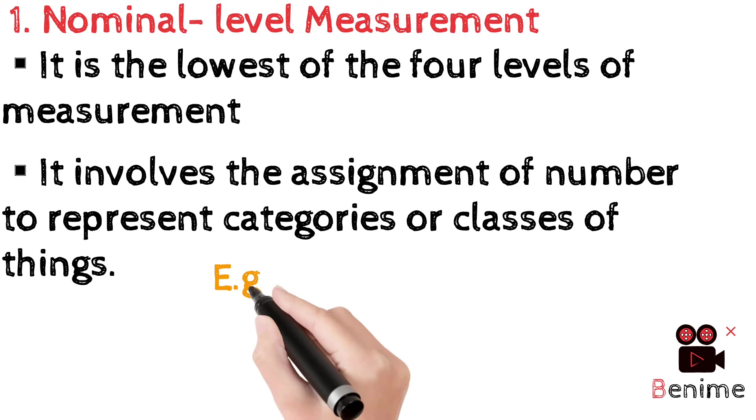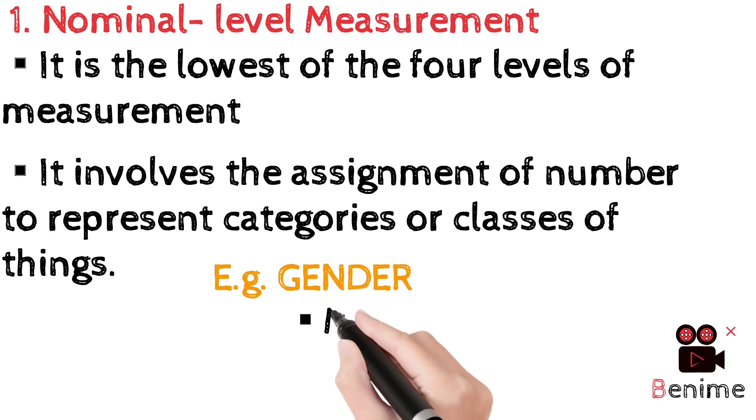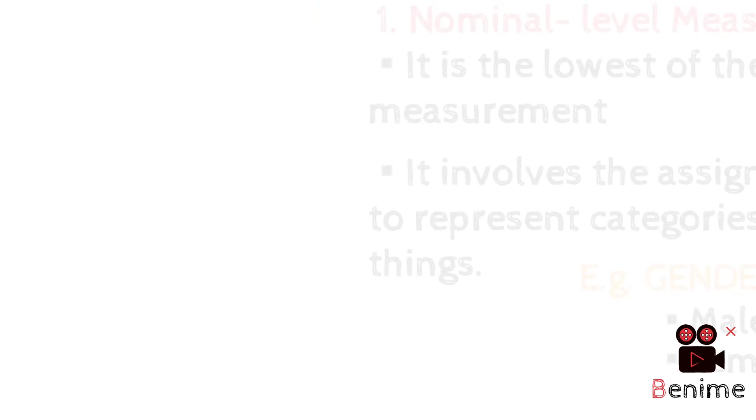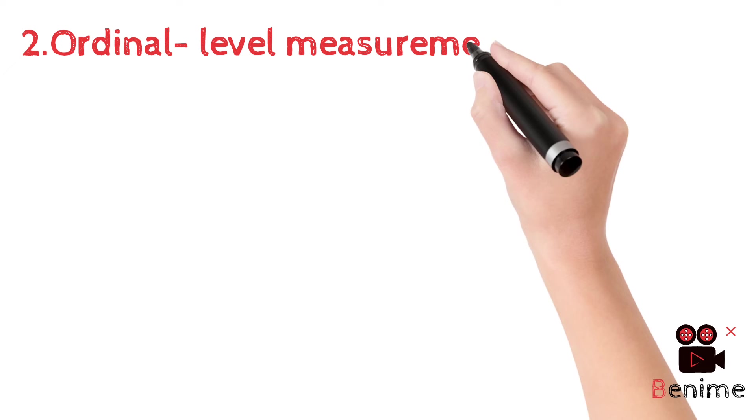Here we see the example, gender. There are only two classes, male and female. This is the nominal level measurement.